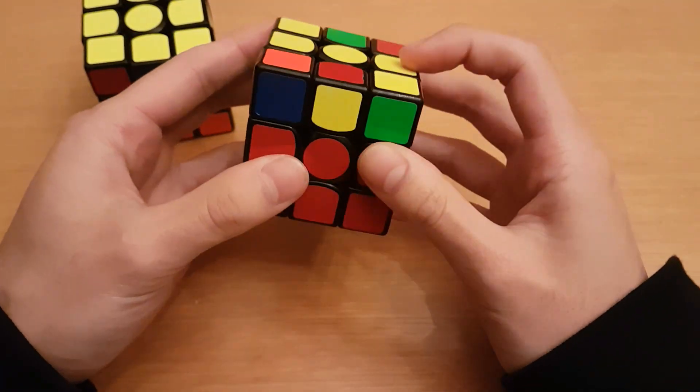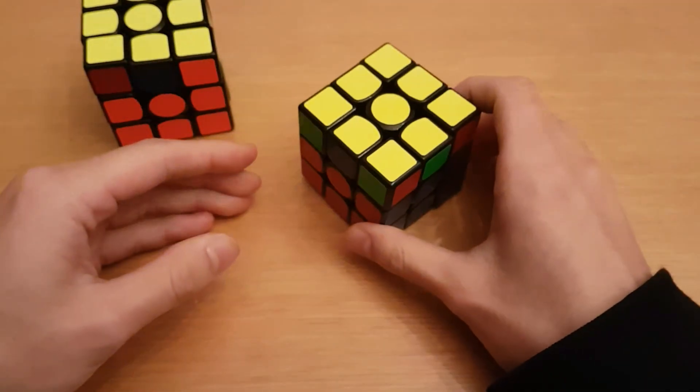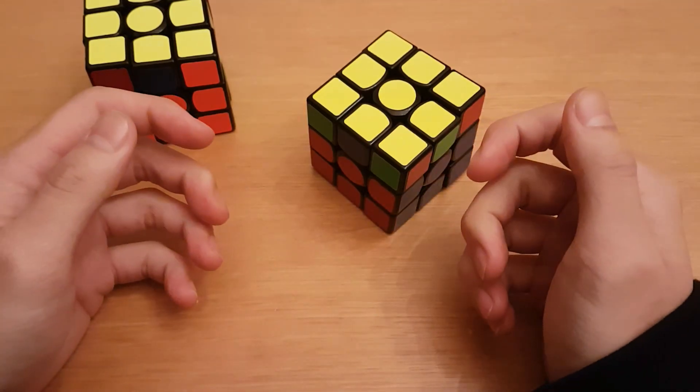You can do that really fast like this. That basically takes out the second look - the recognition time of OLL.